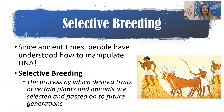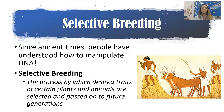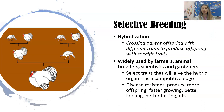Even before we knew that DNA existed, we've understood how to manipulate DNA. In ancient times, people understood that they could breed cattle that were the biggest and the strongest, and then their offspring would be just as big and just as strong. This is called selective breeding — the process by which desired traits of certain plants or animals are selected and passed on to future generations. That is manipulating DNA, though not using the technology we have today for genetic engineering.